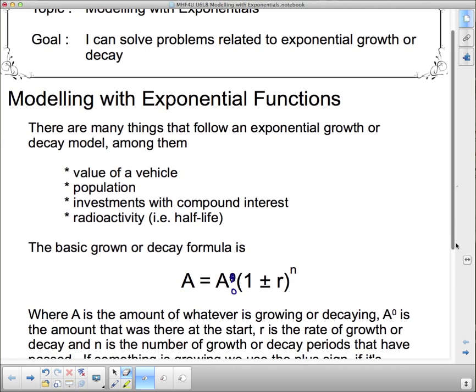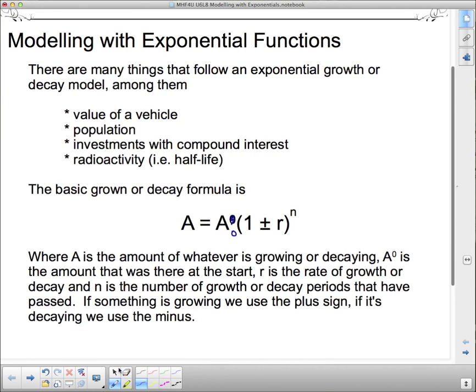So the basic growth or decay formula is A equals A₀ bracket one plus or minus, depending on whether we're growing or decaying, one plus or minus the rate of growth. Now the rate of growth has to be given to us as a decimal.